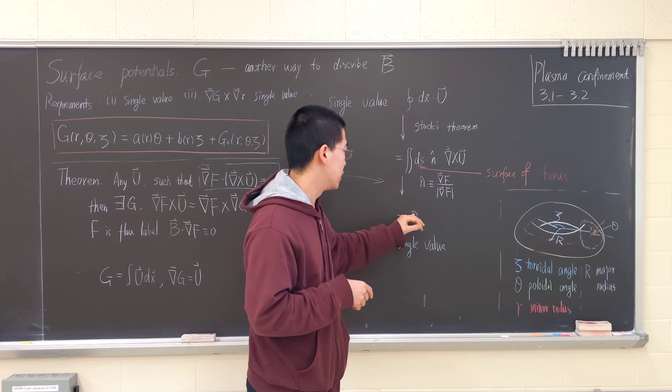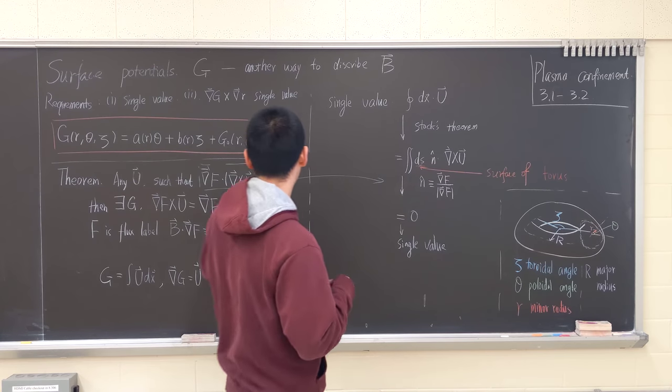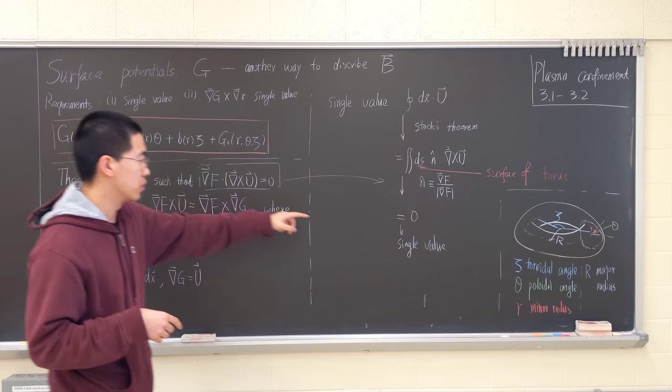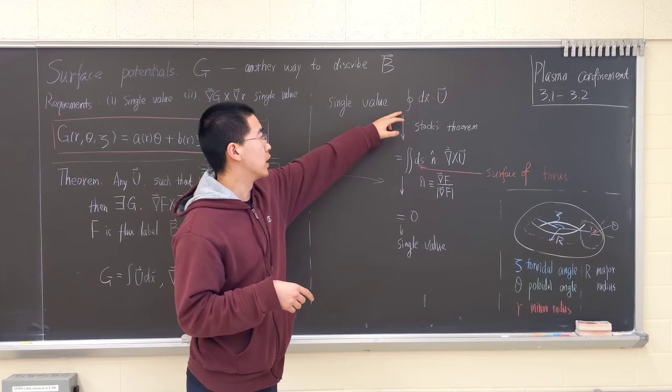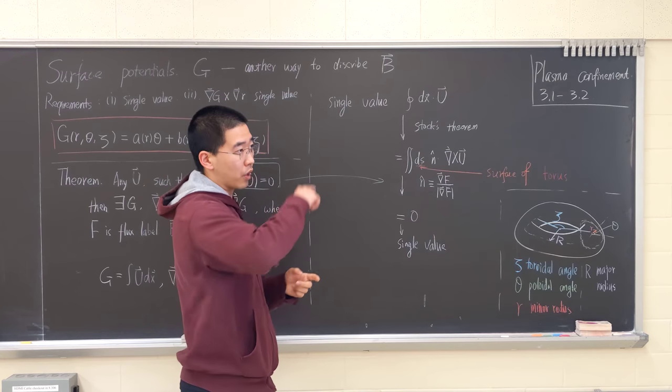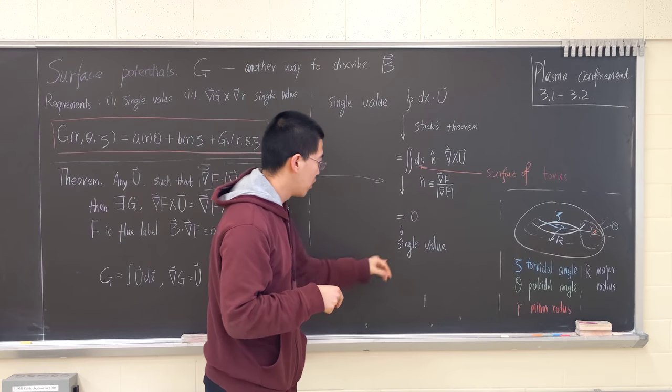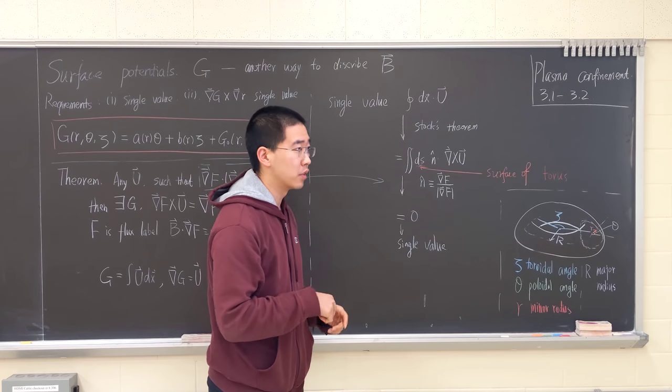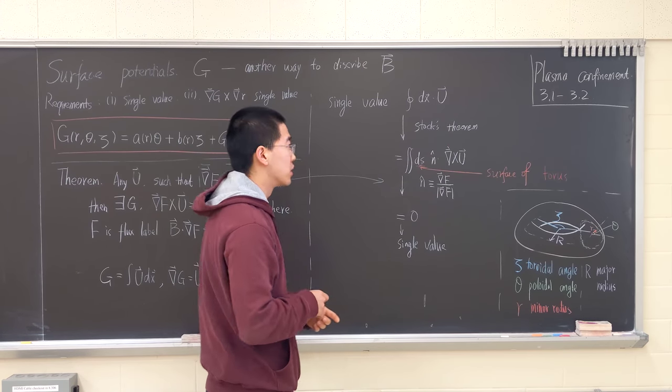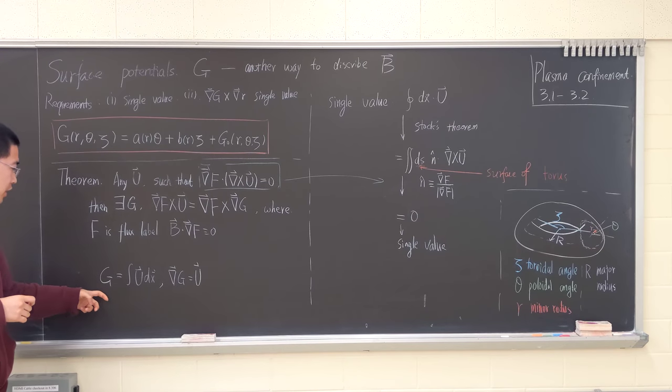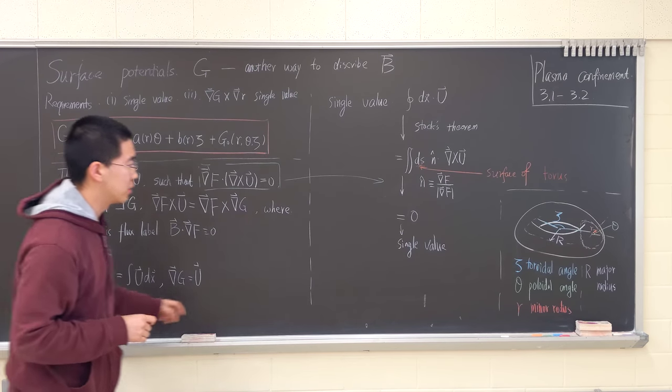From the definition we know that this is equal to zero. We are sure that going around within any loop will go back to itself, thus we make sure that G is single value.